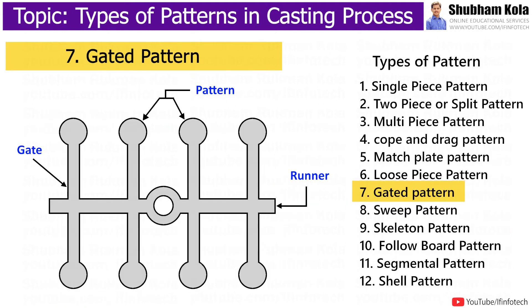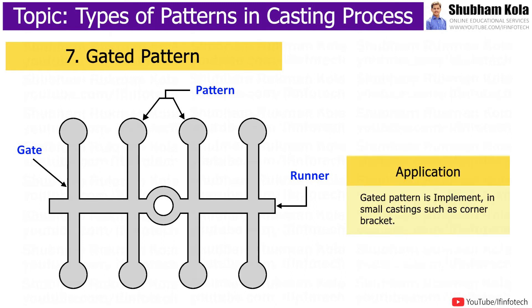Next is gated pattern. These are used to make multiple components inside a single mould. Gated pattern consists of one or more patterns, where gates are used for joining different patterns. These are loose patterns where gates and runners have already been attached. These patterns are very expensive, and due to their high cost, they are used for creating small castings. These small castings are further used in moulding machines as well as in mass producing processes, such as corner bucket.